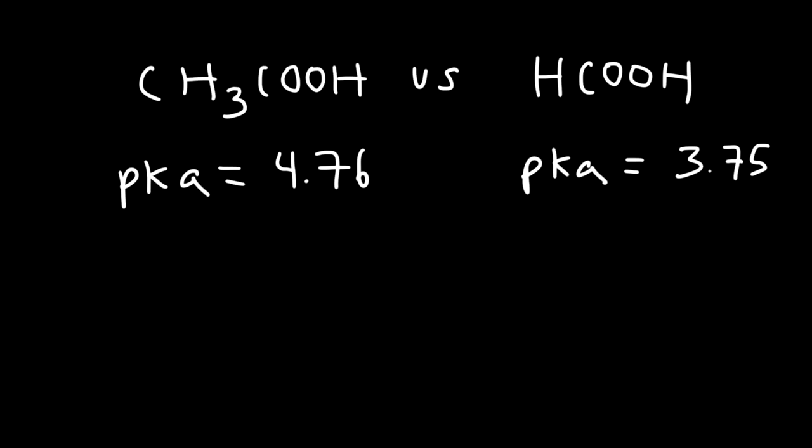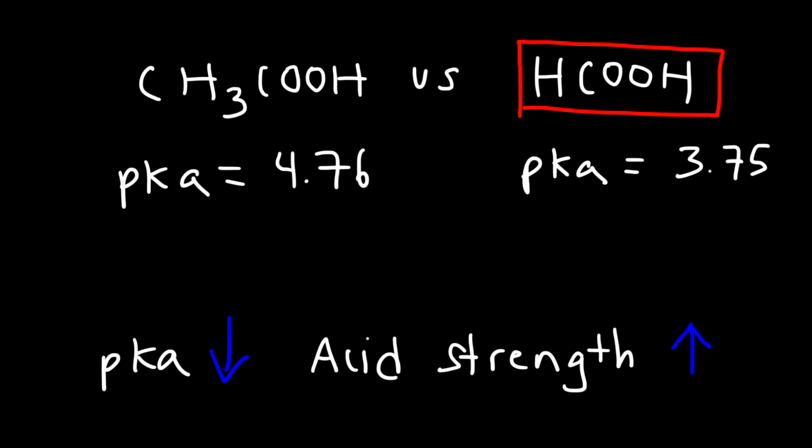So what you need to know is that acid strength and pKa are inversely related. In fact, as the pKa decreases, the acid strength increases. So the stronger acid is the one that has the lower pKa value. Now, 3.75 is lower than 4.76, so what this tells us is that formic acid is a stronger acid than acetic acid.